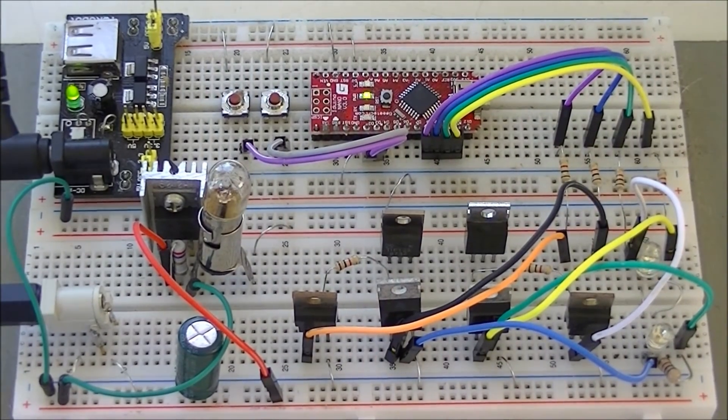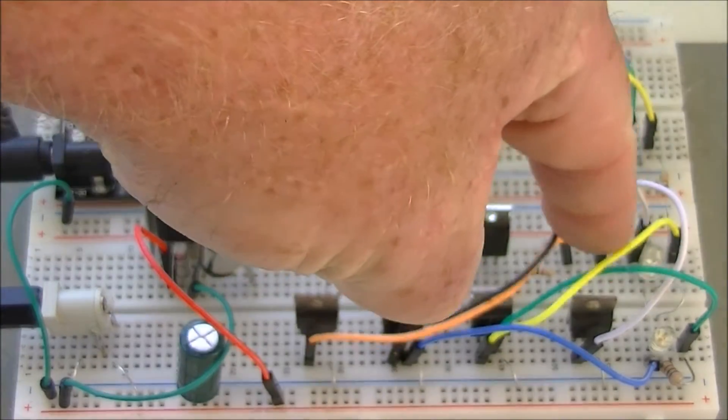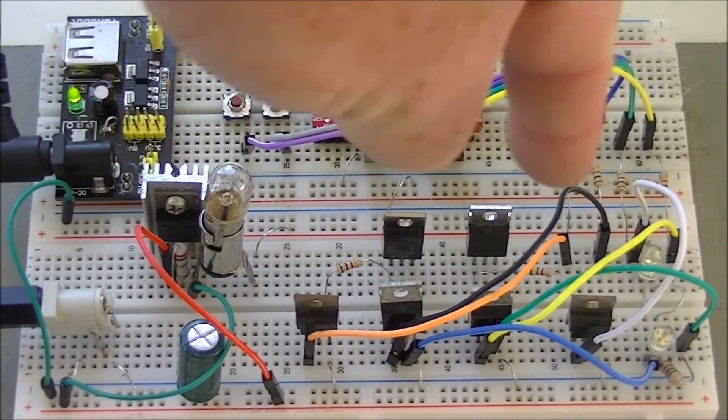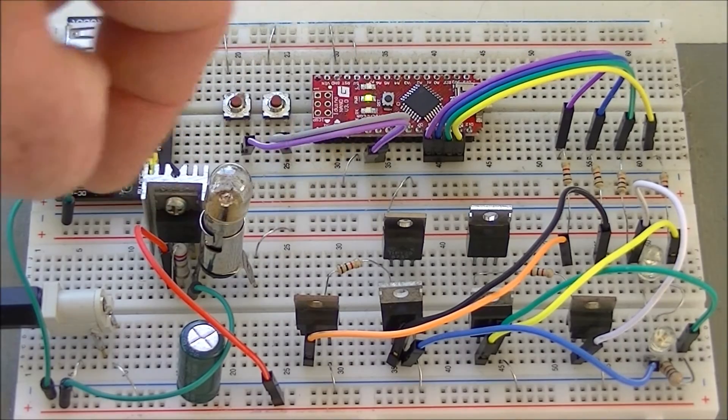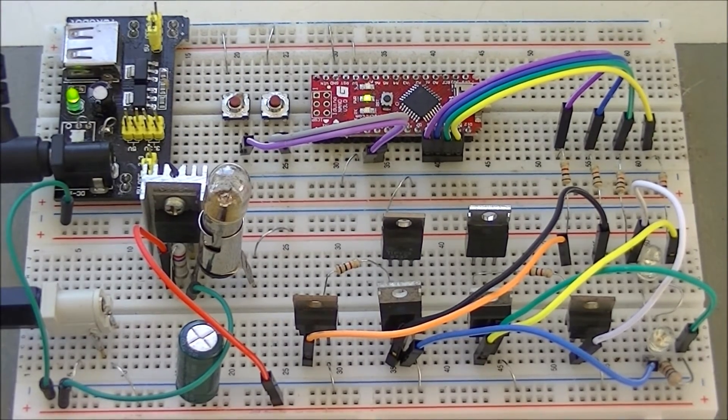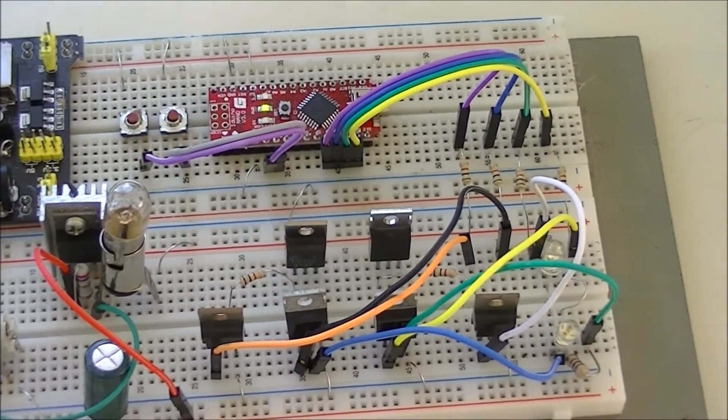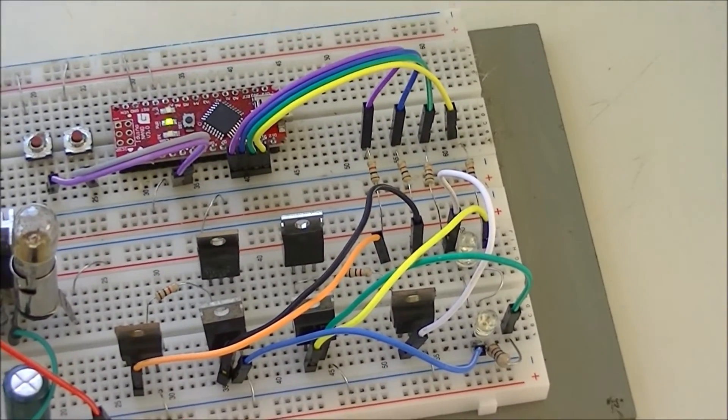The H-Bridge itself consists of these four transistors here. These two on the side drive the PNP transistors up here. Notice all the way to the side, let's scoot it over just a little bit and focus in on that.